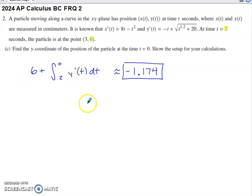So here we can just go to the calculator like this and end up with our result rounded to the third digit past the decimal of negative 1.174.